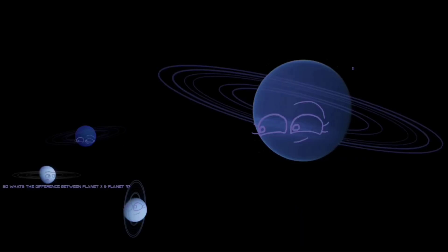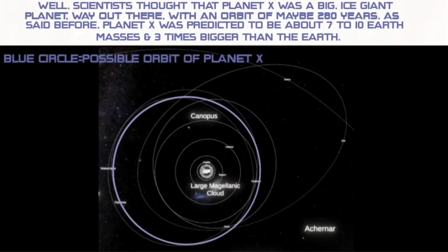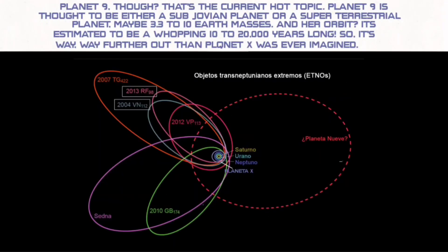So, what's the difference between Planet 9 and Planet X? Well, scientists thought that Planet X was a big ice giant planet, way out there, with an orbit of maybe 280 years. As said before, Planet X was predicted to be 7 to 10 Earth masses and 3 times bigger than the Earth. Planet 9 though? That's the current hot topic. Planet 9 is thought to be either a subjovium planet or a superterrestrial planet, maybe 3.3 to 10 Earth masses. And her orbit is estimated to be a whopping 10 to 20,000 years long. So it's way, WAY further out than Planet X was ever imagined.